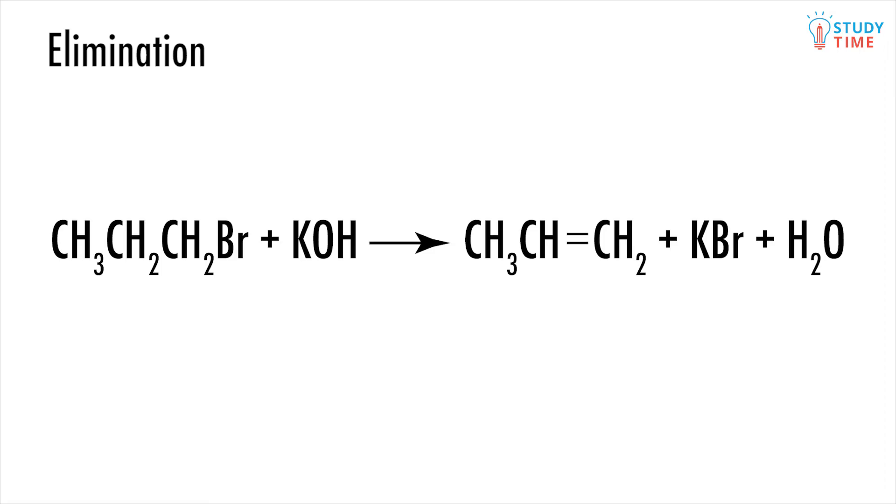Let's look at the removal of a hydrogen and a halogen from one-bromopropane by reacting it with alcoholic KOH. Recognize an elimination reaction by the organic reactant having gained a bond by the time it becomes the organic product.